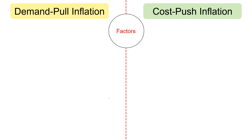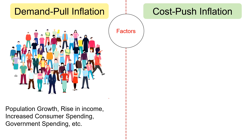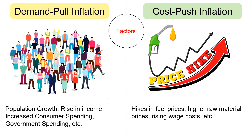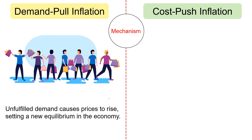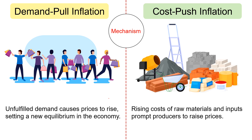Regarding factors: population growth, rise in income, increased consumer spending, government spending, etc. are some common demand-pull factors. As against, rise in the price of factors of production — like hike in fuel prices, higher raw material prices, rising wage costs, etc. — are cost-push factors. Regarding mechanism: in demand-pull inflation, the unfulfilled demand causes prices to rise, setting a new equilibrium in the economy. Whereas in cost-push inflation, rising cost of raw materials and inputs prompts producers to raise prices.